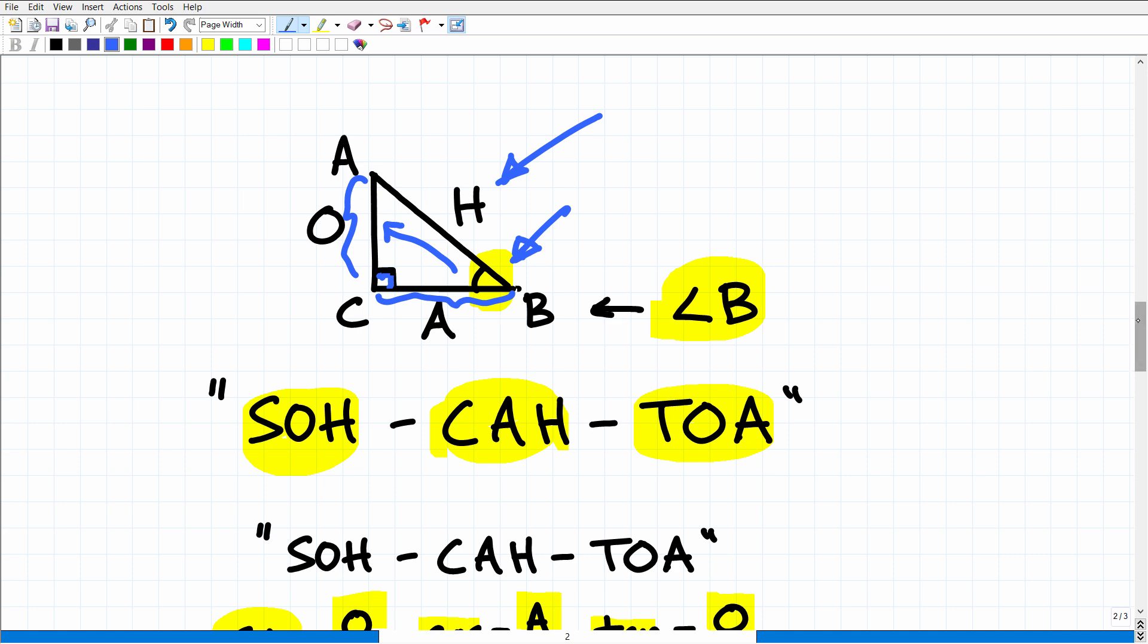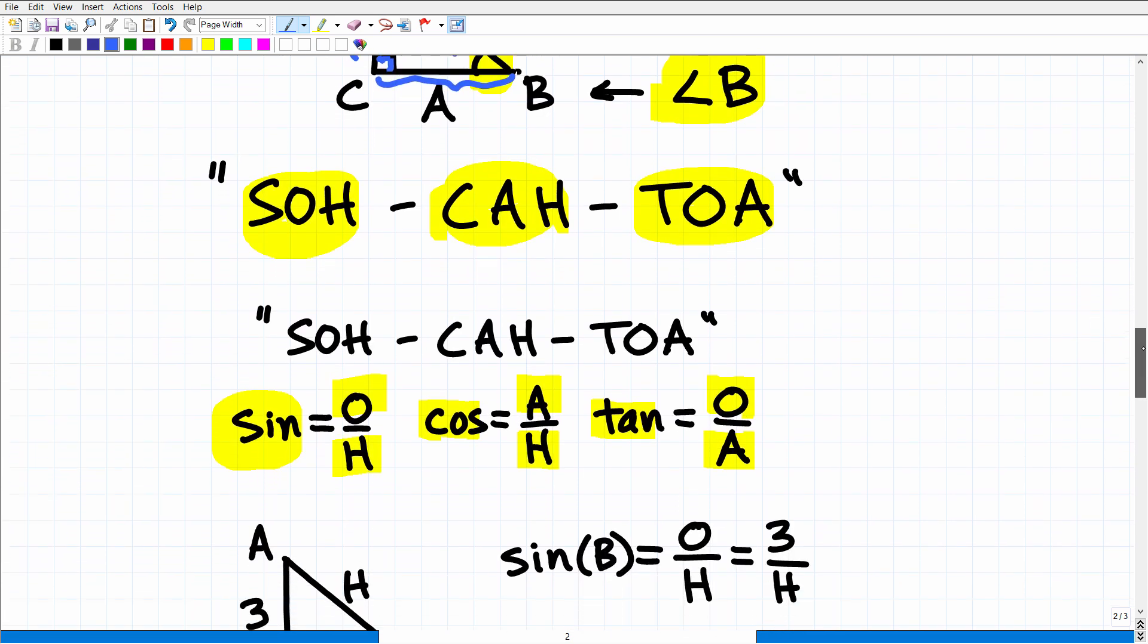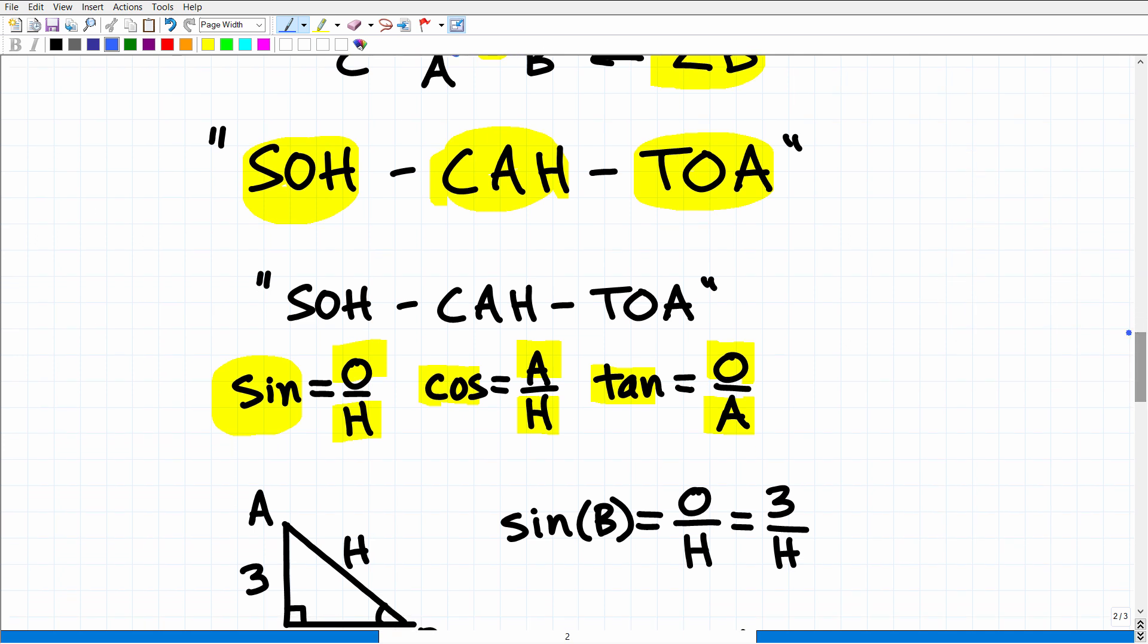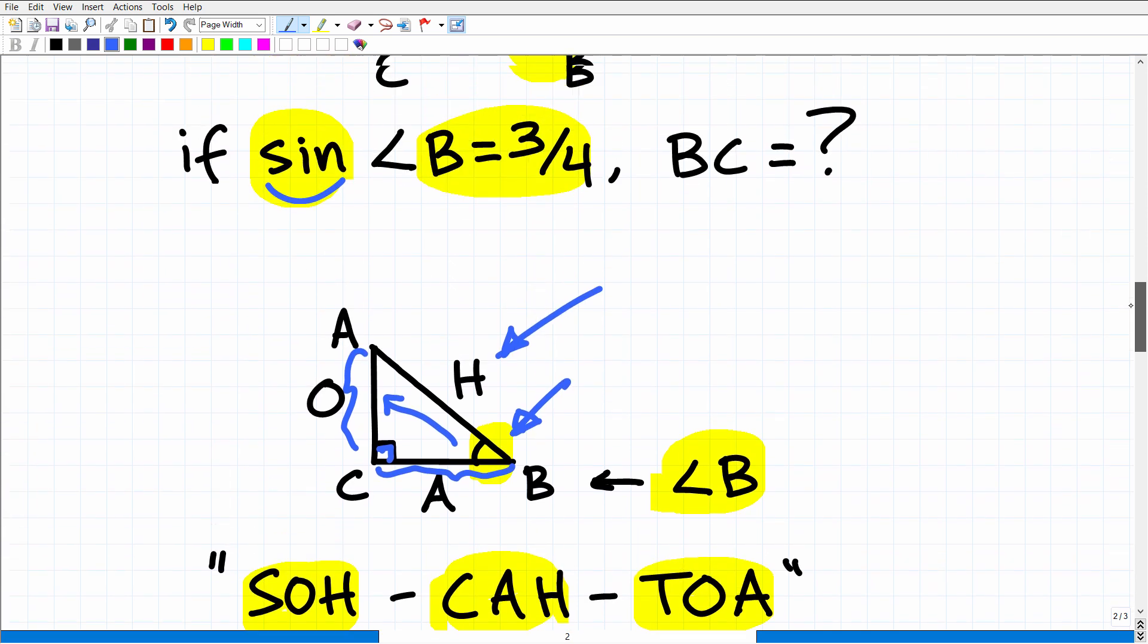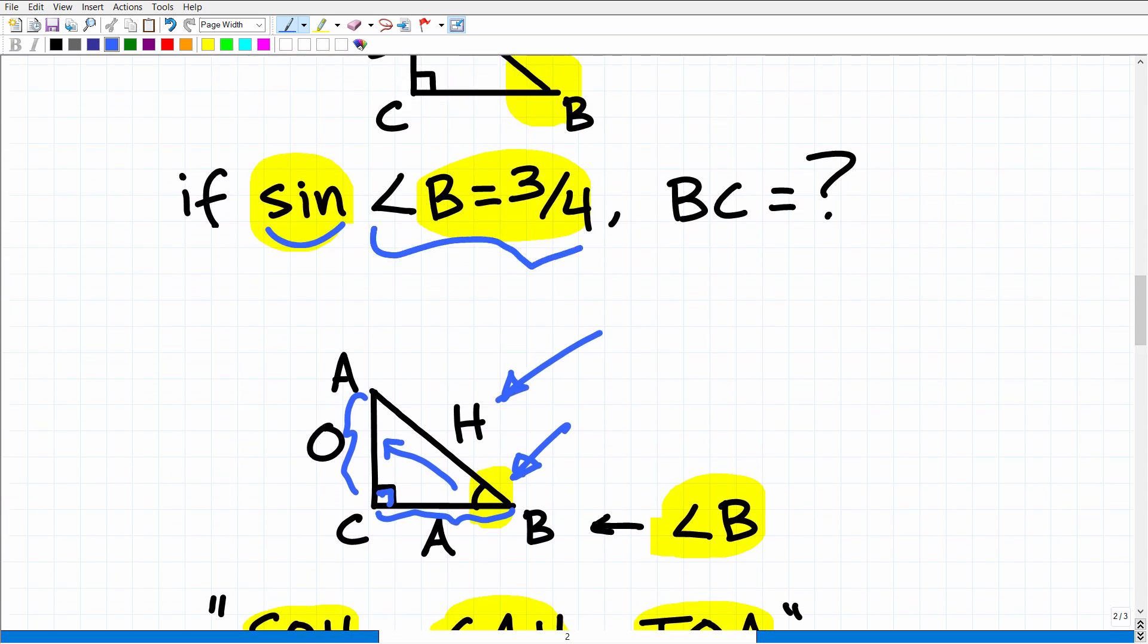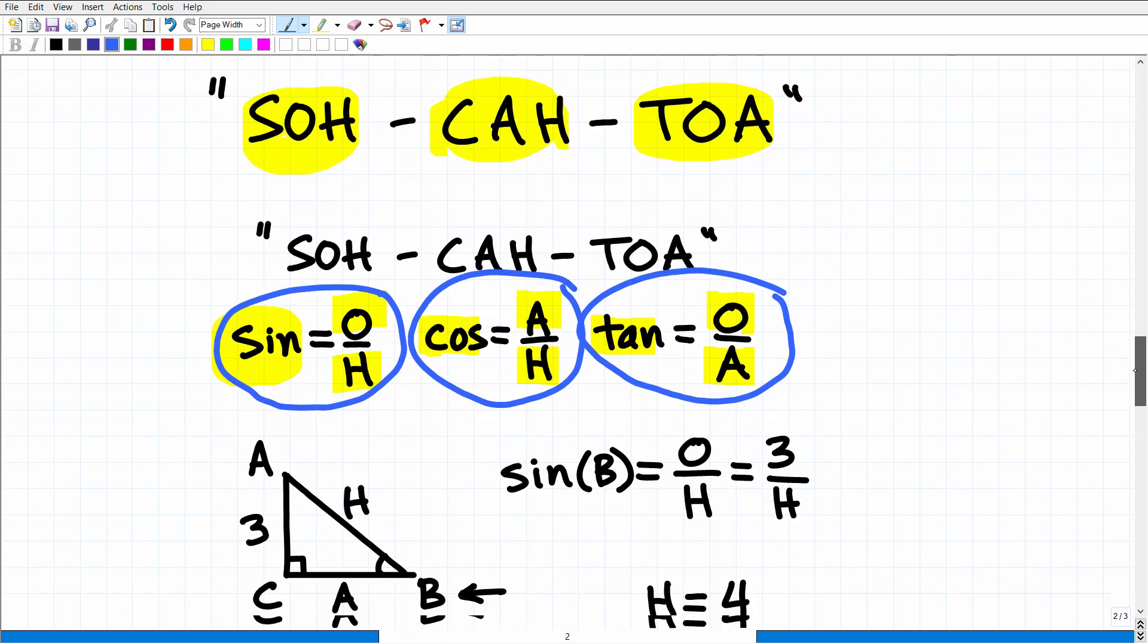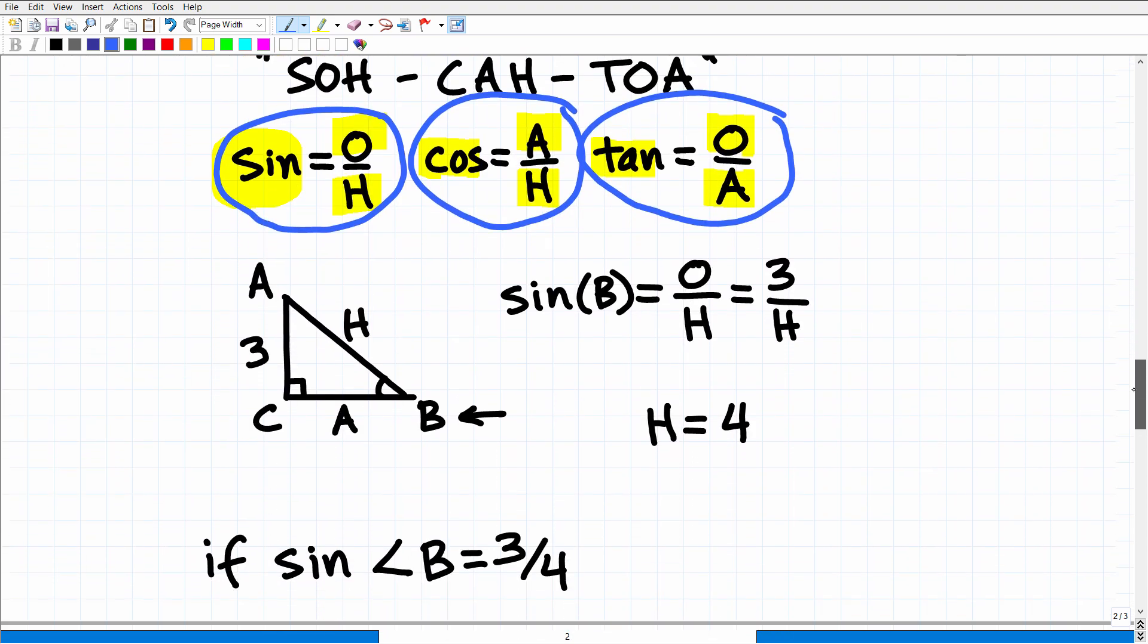Okay, so again, we're talking about trigonometric ratios. We're comparing two sides. So sine of an angle would be the opposite over the hypotenuse. Cosine would be the adjacent over the hypotenuse. And tangent is the opposite over the adjacent. Okay, so now, what do we know about this problem? Well, we know that the sine of this angle right here, sine of angle B, is equal to 3 fourths.